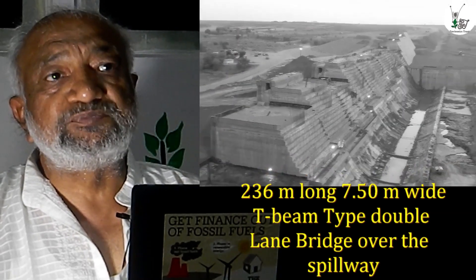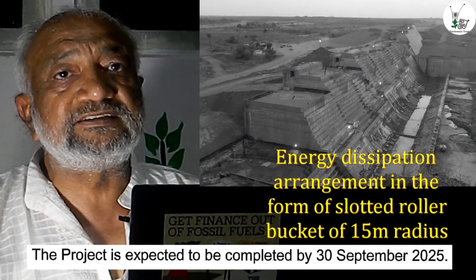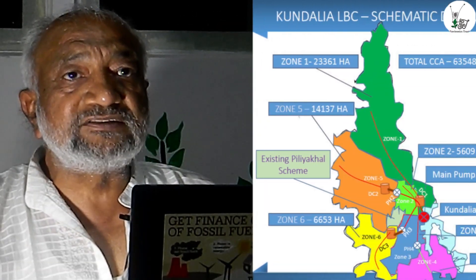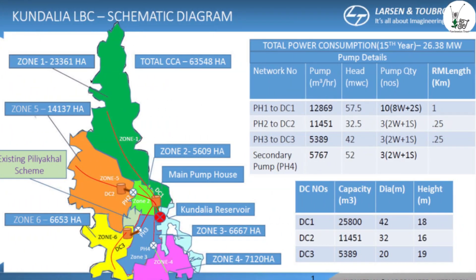This project, which is supposed to be completed by September 2025, comprises various other aspects of irrigation. There is a right bank and a left bank canal system, and it is supposed to irrigate somewhere close to about 75,000 hectares in the command area.